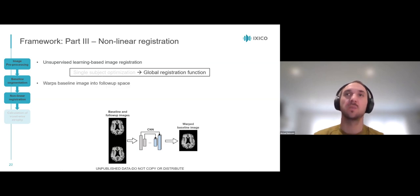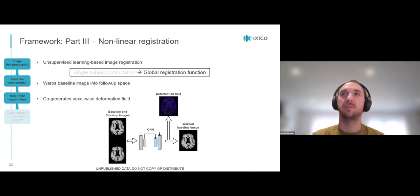The CNN warps the baseline image into follow-up space and co-generates a voxel-wise deformation field, which describes how the baseline image is exactly warped. That's very convenient to have, because we can then also warp any baseline segmentation accordingly.